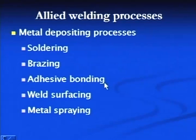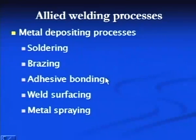The strength of brazed joints is somewhat better than soldered joints. In adhesive bonding, the joint is produced by putting adhesives between the faying surfaces and keeping the joint under pressure, sometimes with curing to increase the strength. A typical example of adhesive bonding is the use of M-seal or Fevicol.